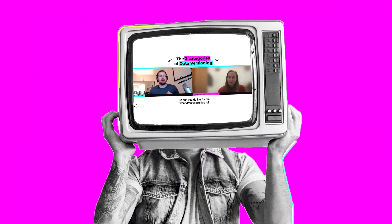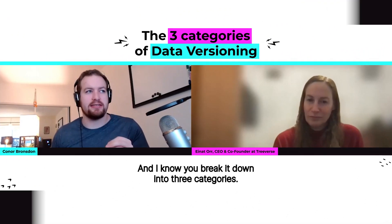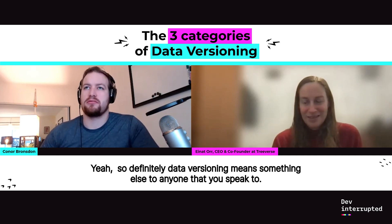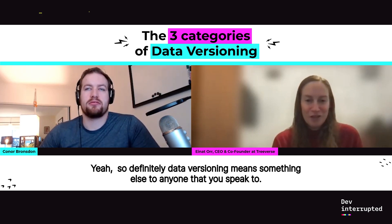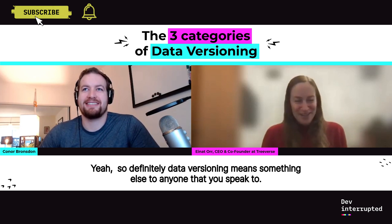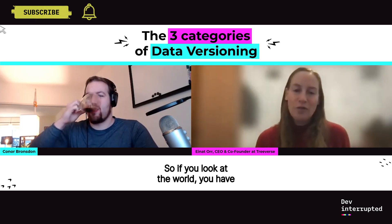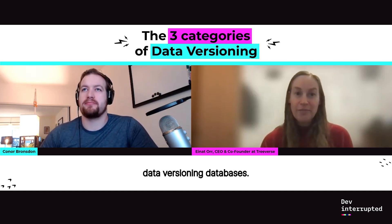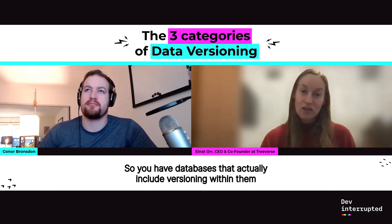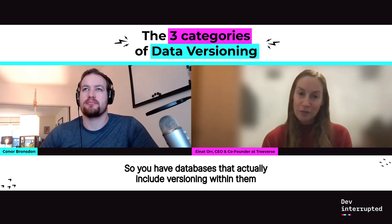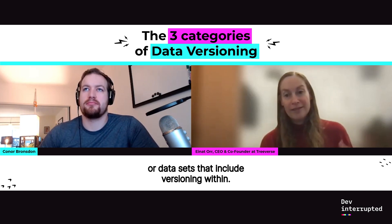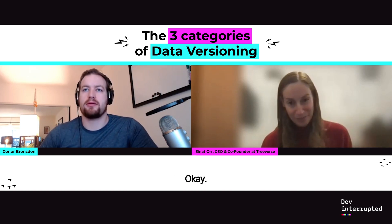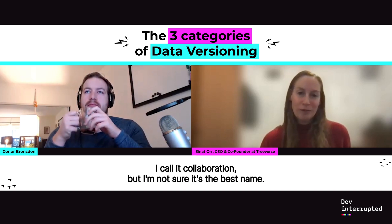Can you define what data versioning is? I know you break it down into three categories — I'd love to hear about each. Data versioning means something else to anyone you speak to. If you look at the world, you have versioning databases — databases or datasets that actually include versioning within them. I put those two in the same bucket; I call it collaboration, though I'm not sure it's the best name.